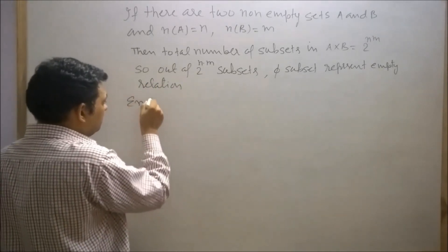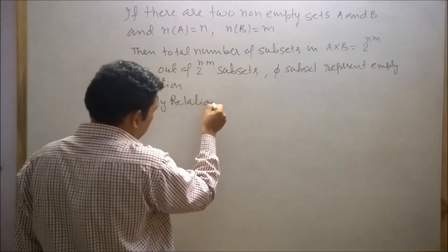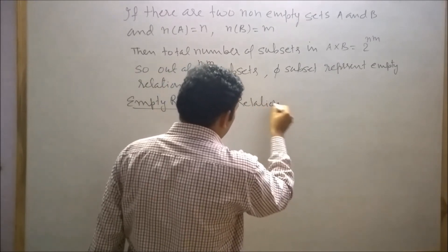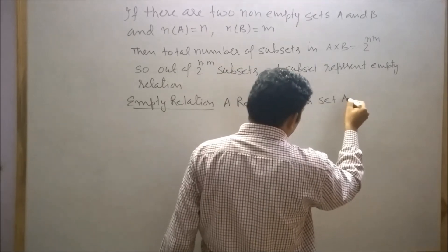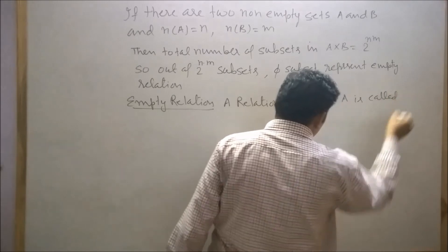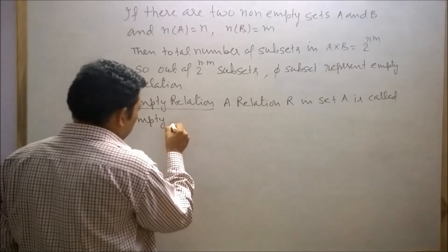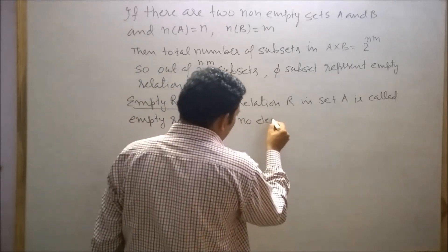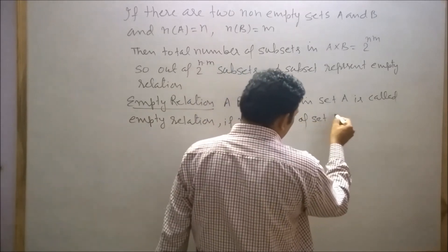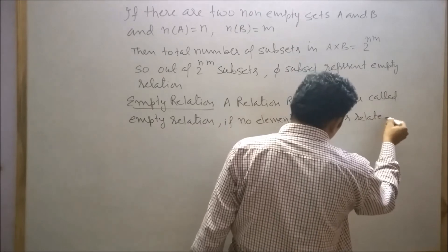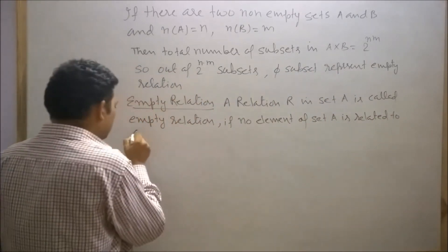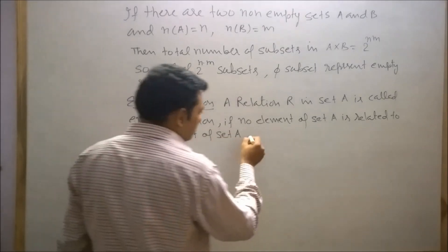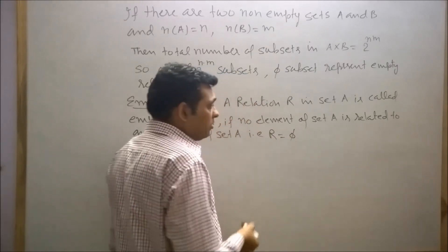Empty relation can be defined as: a relation R in set A is called empty relation if no element of set A is related to any element of set A. That is, R equals phi, where phi is a subset of A cross A.